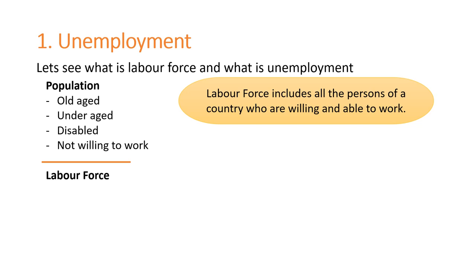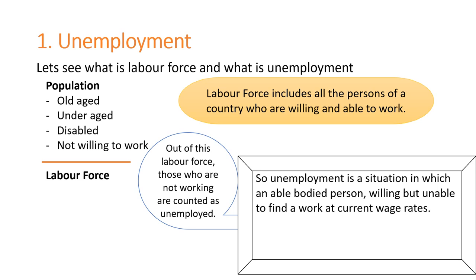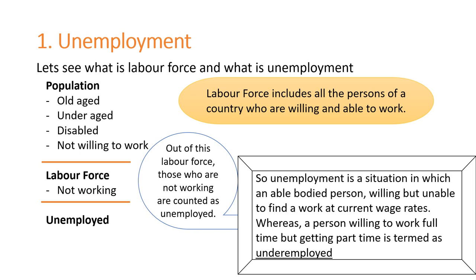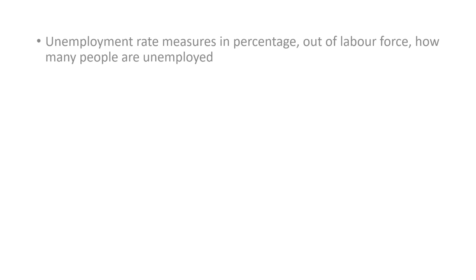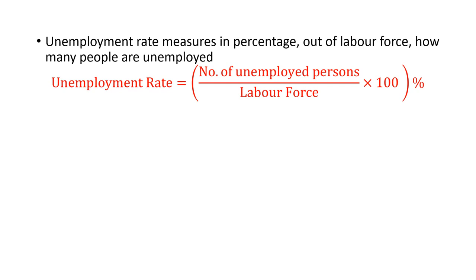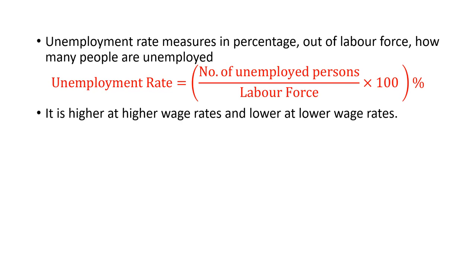Out of this labour force, those who are not working are counted as unemployed. So unemployment is a situation in which an able-bodied person who is willing but is unable to find work at the current wage rate. A person willing to work full-time but who gets part-time work is termed as underemployed. Unemployment rate measures, in percentage, how many people out of the labour force are unemployed. Usually, unemployment is higher at a high wage rate and lower at lower wage rates.